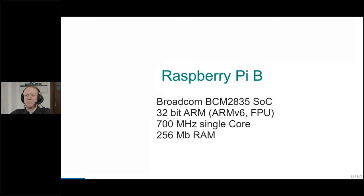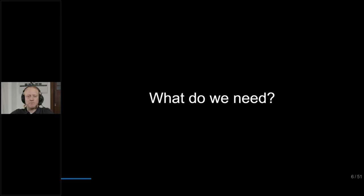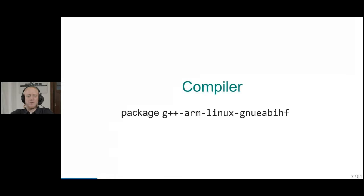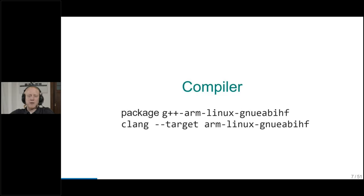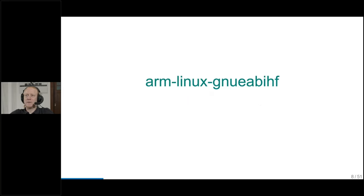Now we know what the hardware is. To compile a program for a Raspberry Pi, we first need a compiler. There's a package called G++ ARM Linux GNU, and also the Clang compiler can compile for Raspberry Pi. Clang doesn't use different packages — you have one Clang compiler and give it a target argument with that same combination of letters. So what is this ARM Linux GNU string?